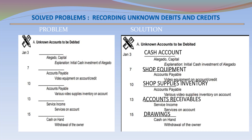January 10 – Shop Supplies Inventory Debit, Accounts Payable Credit – Various video supplies inventory on account. January 13 – Accounts Receivable Debit, Service Income Credit – Services on account.